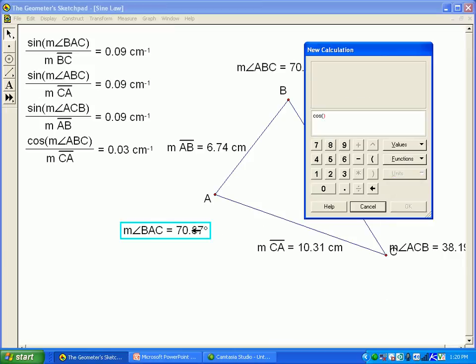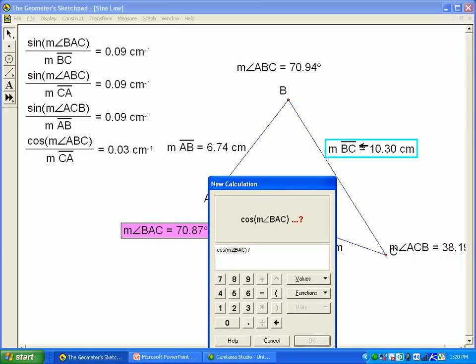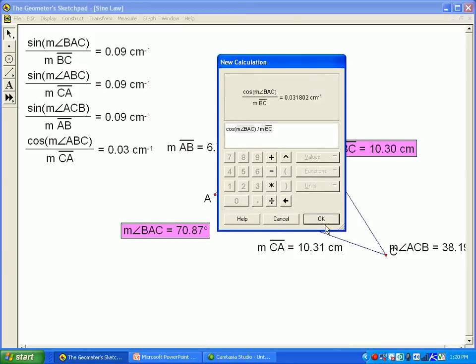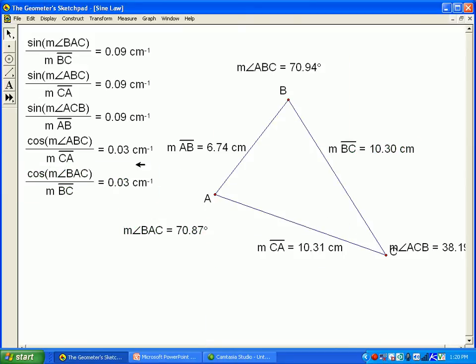They are the same, but if I distort the triangle, notice that they're not always the same. There are ways to make them the same, but we want that trigonometry to always work. Notice that these sine ratios are always the same, but the cosine ratios aren't.